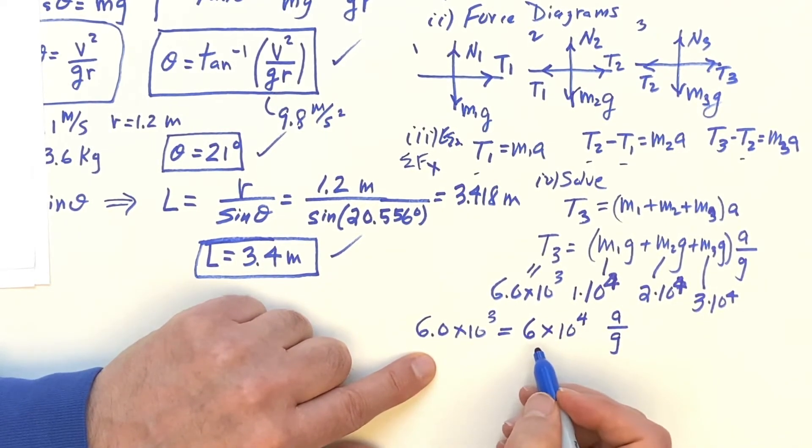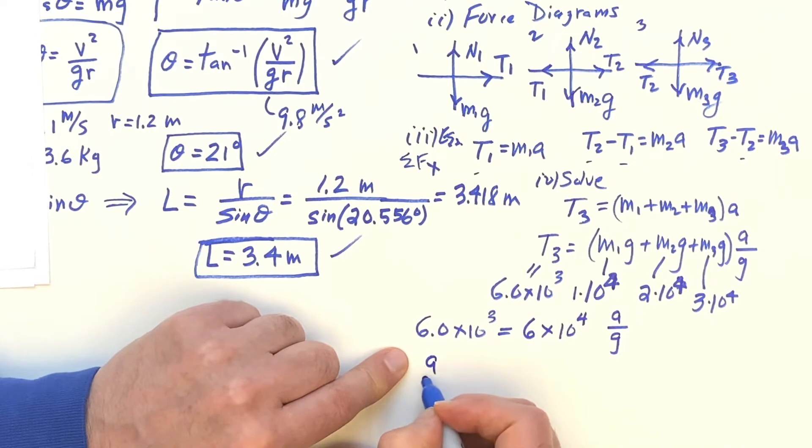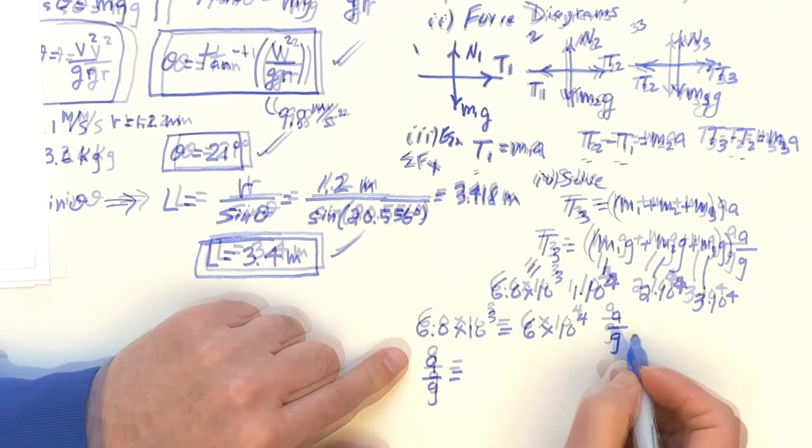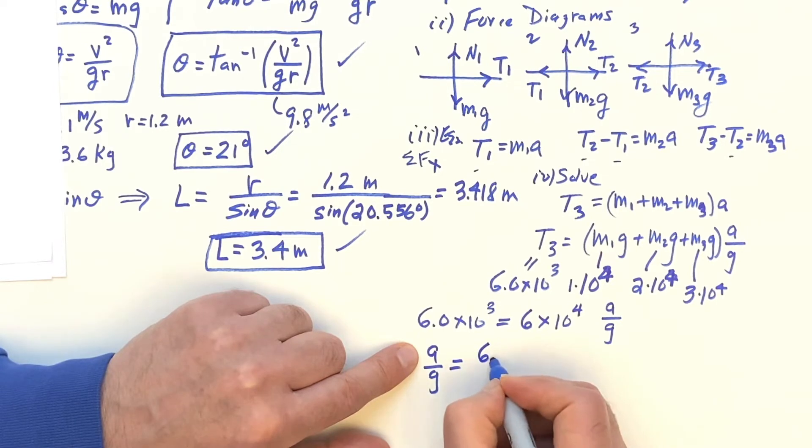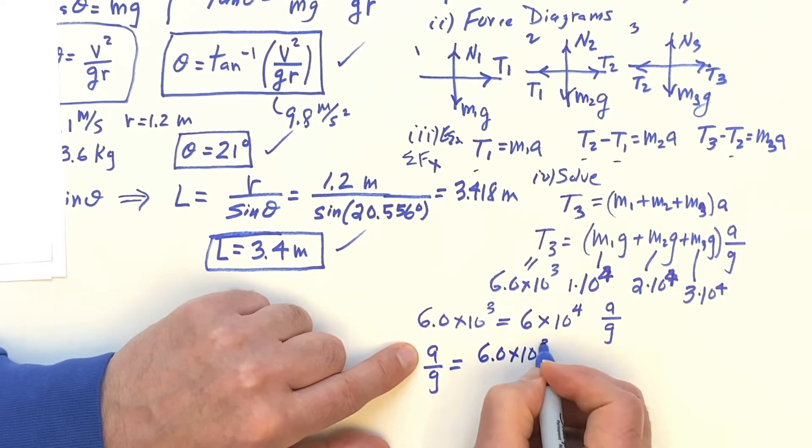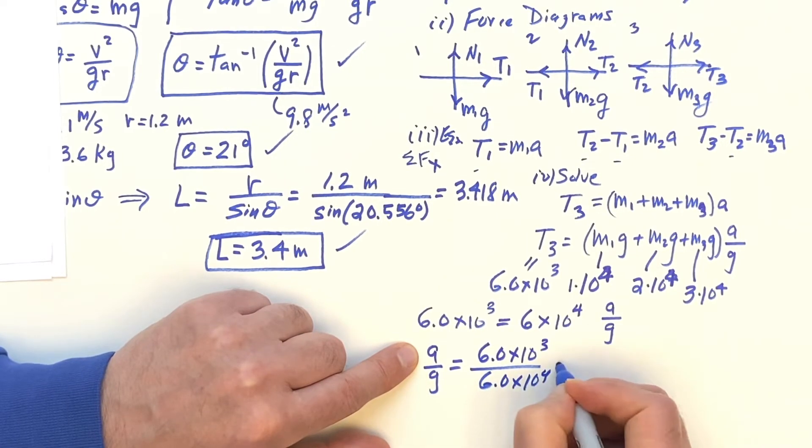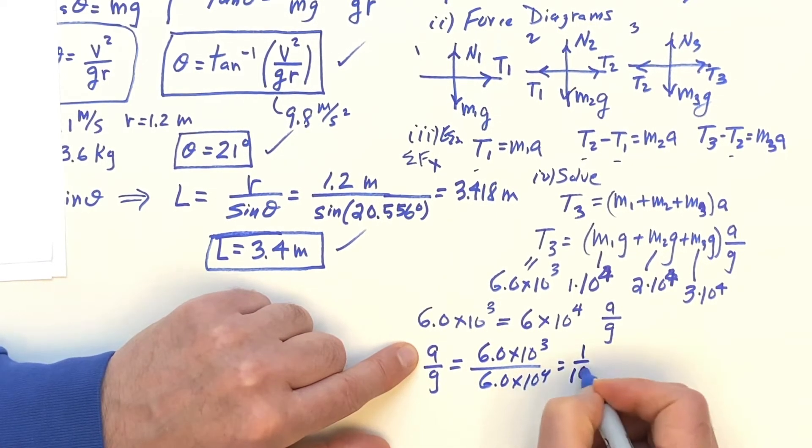So that's going to be really nice how that works out. So A over G. So A over G is going to be equal to 6 times 10 to the third over 6 times 10 to the fourth. And that's simply 1 tenth. That's cool, I like that.